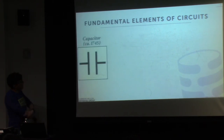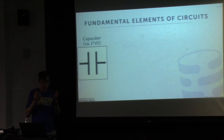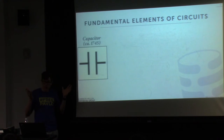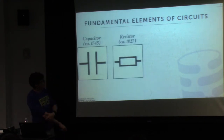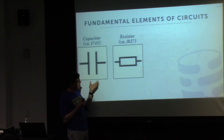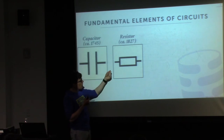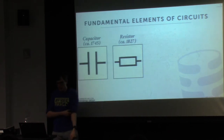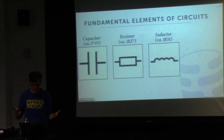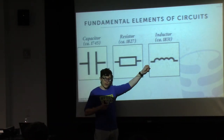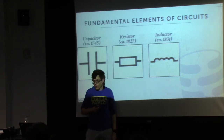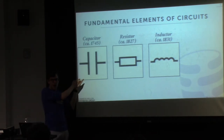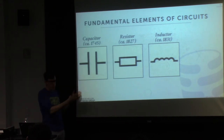Then a few years later came the inductor in 1831 — think of it as a heating coil: you put a charge in and it converts the voltage into heat. If you take an ECE course, they'll describe these three fundamental elements as the basic building blocks for all circuits. What's really interesting is that in 1971, a new professor at Berkeley named Leon Chua worked out the math that there had to actually be a fourth element — the capacitor, inductor, and resistor were not enough.